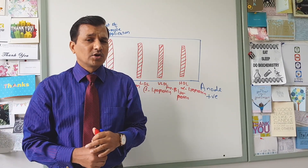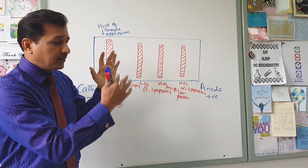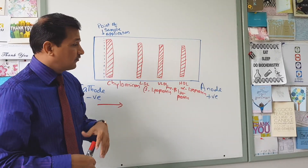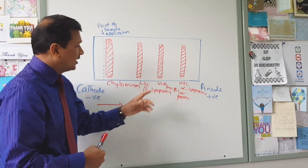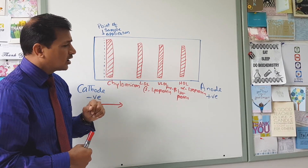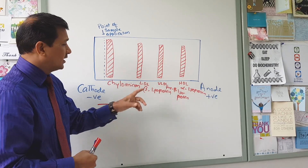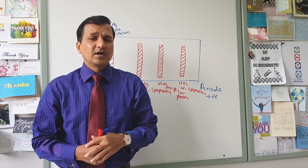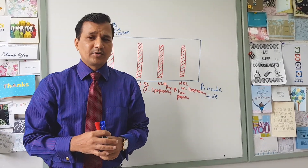If there are elevated levels of total cholesterol in the plasma, LDL will be elevated and its band will be much thicker and wider compared to the other bands. If there are elevated levels of triacylglycerol in the plasma, there will be elevation of VLDL and also chylomicrons. If both cholesterol and triacylglycerol are elevated, then both LDL and VLDL will be elevated. This is how you can correlate and interpret lipid profiles with serum lipoprotein electrophoresis.